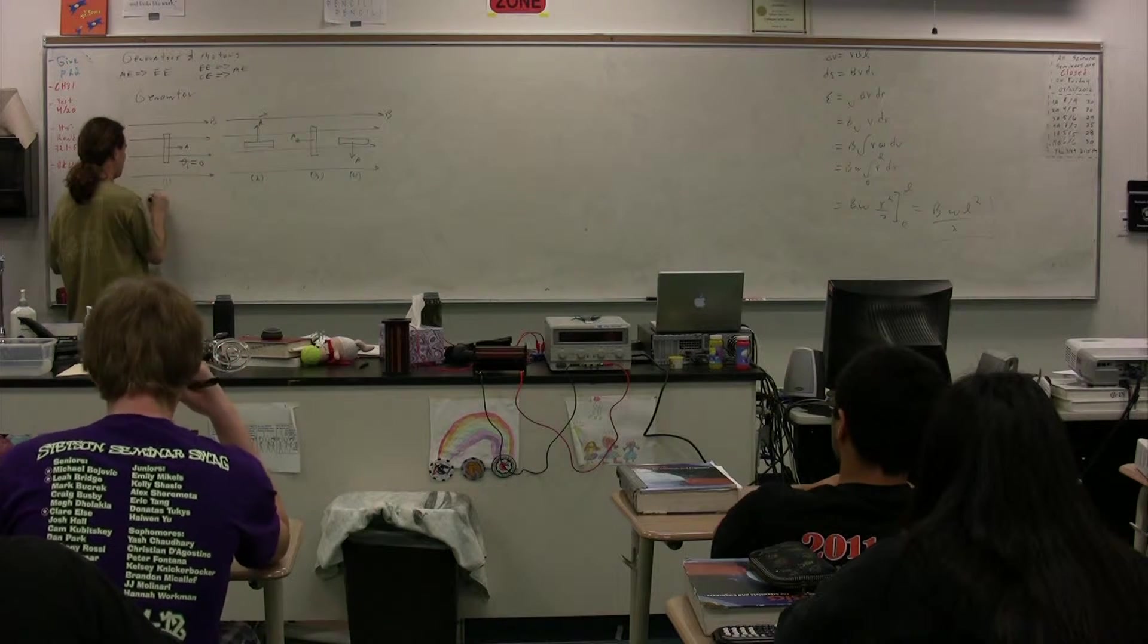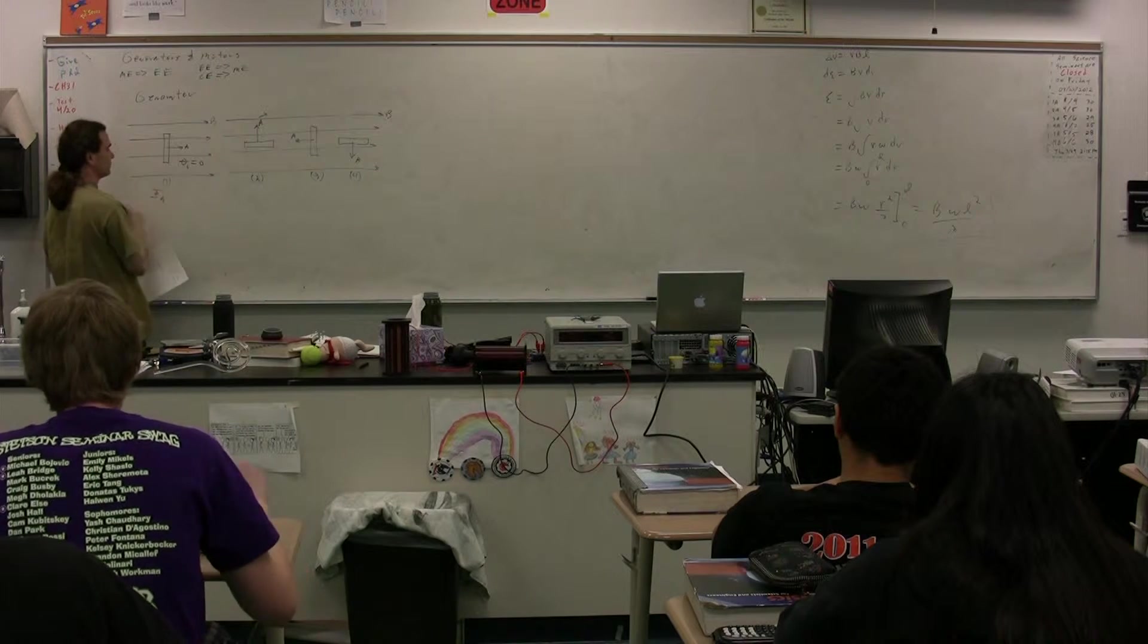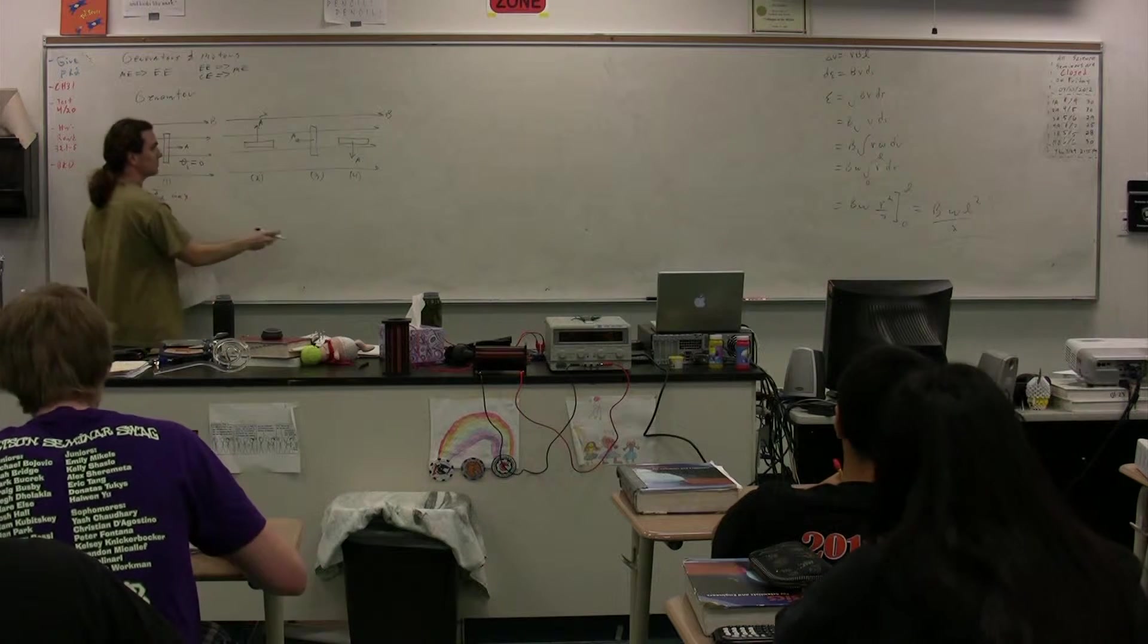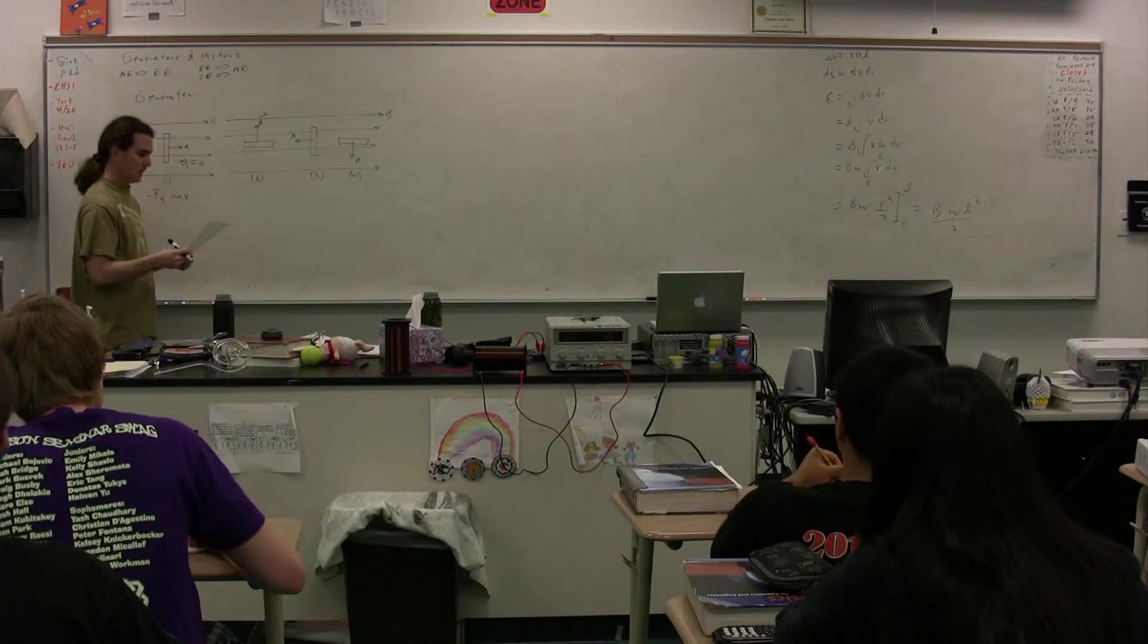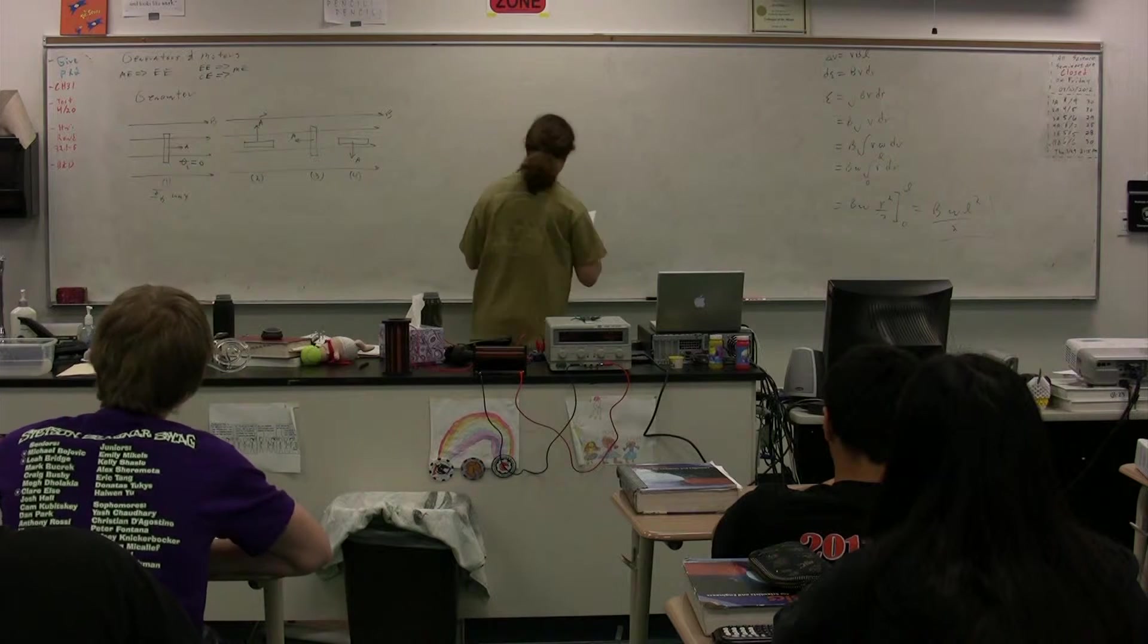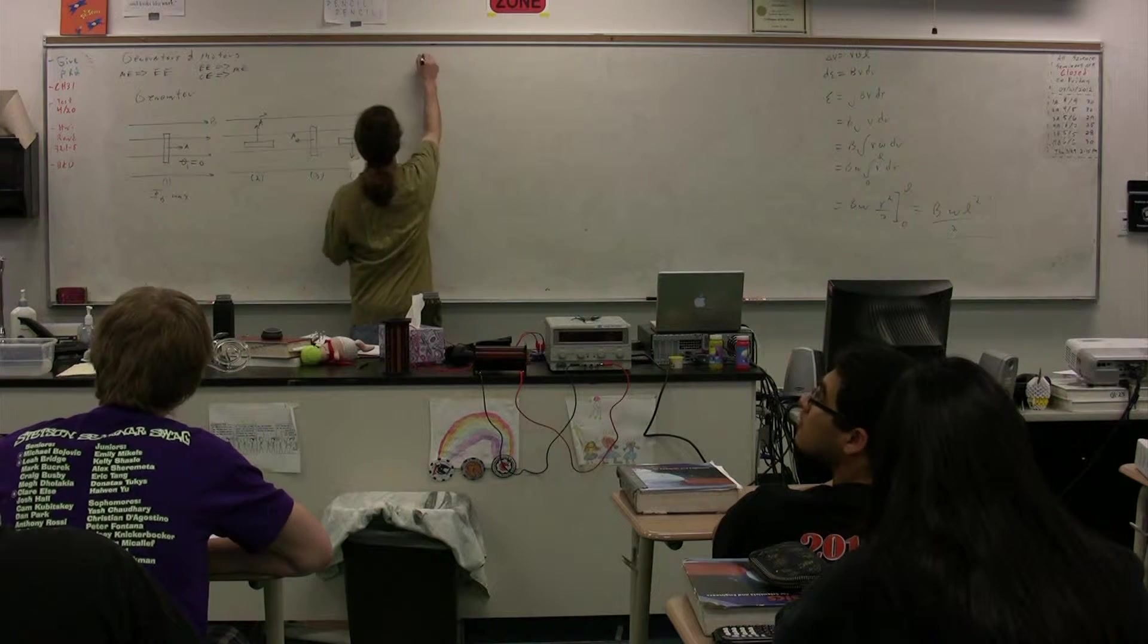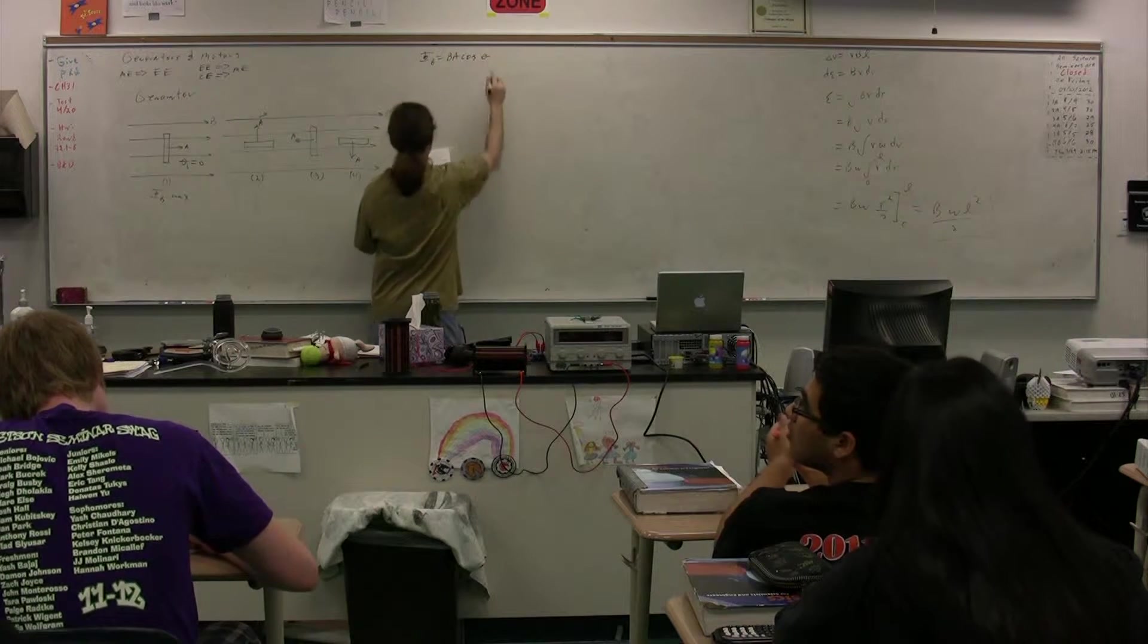Notice, this is going to give us our maximum flux, right? This would be our minimum flux, and these would both be zero flux. But what we need to do is we need to figure out the EMF, and that is our goal. So the magnetic flux is equals BA cosine theta.